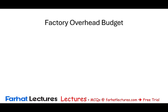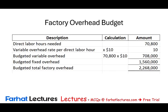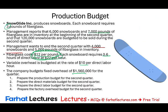For the factory overhead budget, variable overhead is based on direct labor hours. We have 70,800 hours at $10 per direct labor hour, so variable overhead is budgeted at $708,000. We then add the budgeted fixed overhead of $1,560,000, which is given to us. Therefore, the total budgeted factory overhead is $2,268,000. With that, we have answered all four questions required when preparing a production budget.